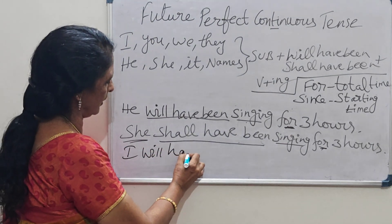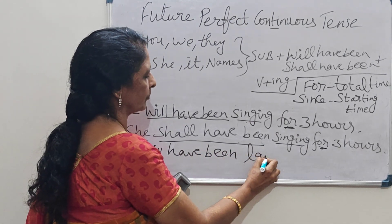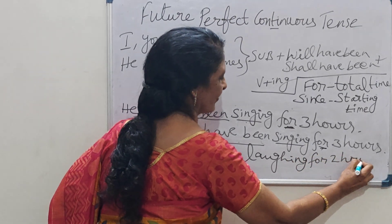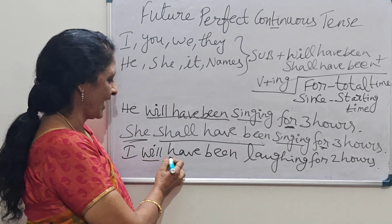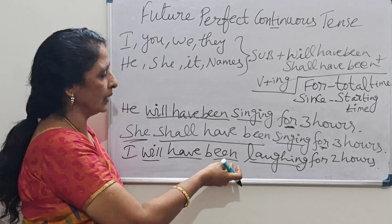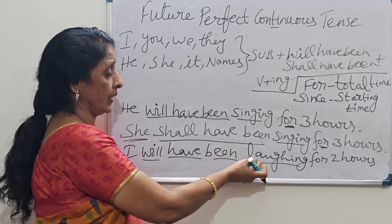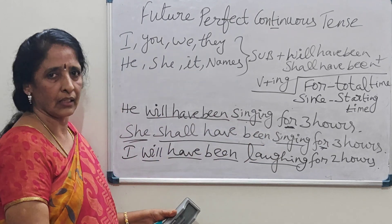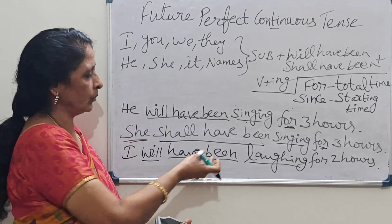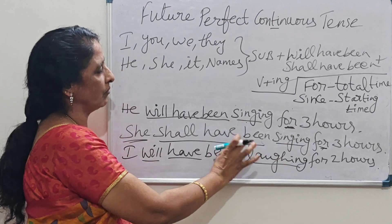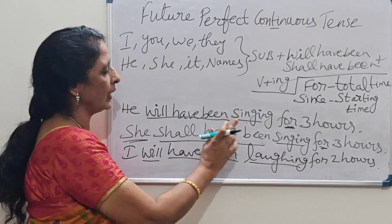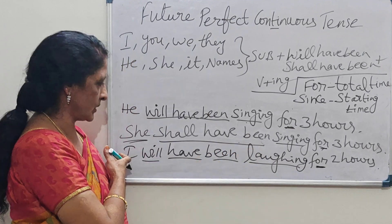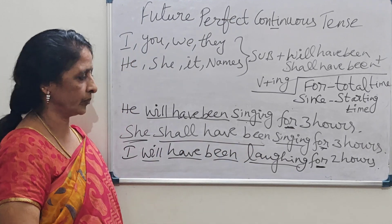Final example: 'I will have been laughing for two hours.' You can also learn vocabulary here — laugh, sing, work, study, read, run. Verb plus ing is very important. 'For' indicates total time — how many hours she, he, or I am doing the action. Thank you.